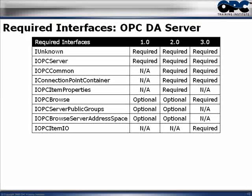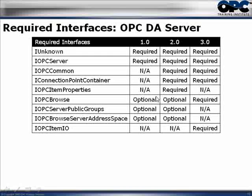First, it starts out with required interfaces. Every OPC server is supposed to have some interfaces that are required. For example, if somebody has an OPC Data Access 3.0 server and you're interested in browsing, the IOPC Browse in OPC Data Access 3.0 is actually required. In OPC Data Access 2 and OPC Data Access 1.0, it was actually optional. You can look at the chart and tell what is a required feature and what is optional.